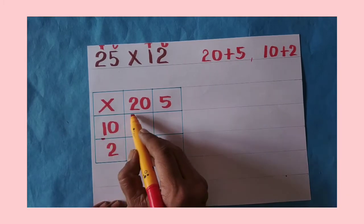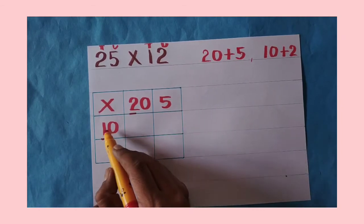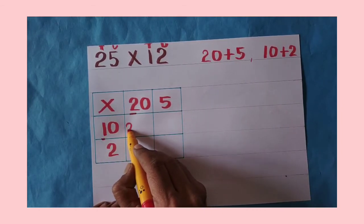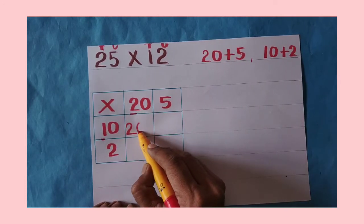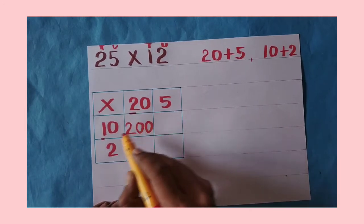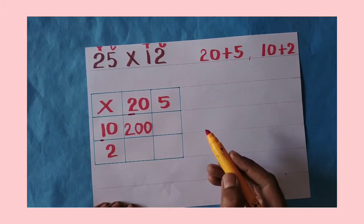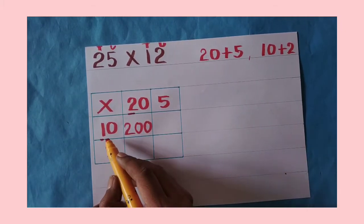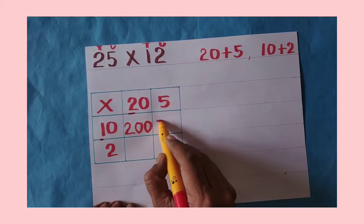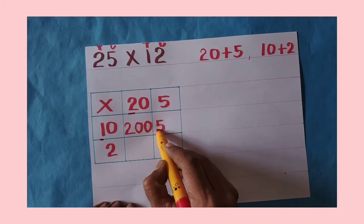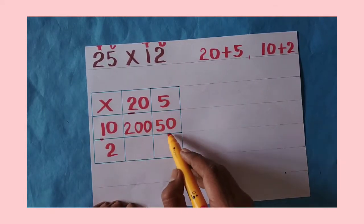So what we should do: the tens place number, multiply that. Ten into twenty, multiply them, you will get 200. Okay children, now 10 into 5, so starting with 1 into 5 is 5, and zero in the tens place, so write it next to that. So 10 times 5 is 50.